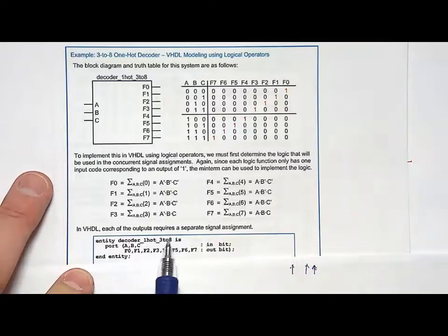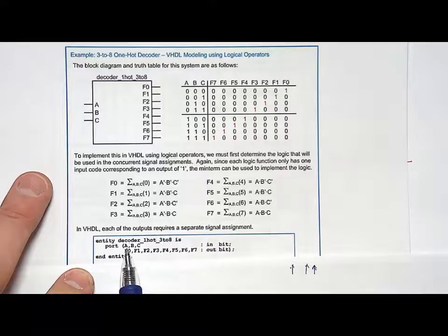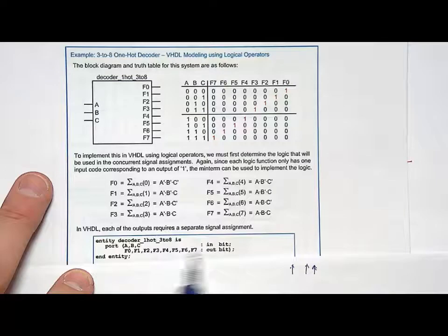Here's what the entity would look like. Let's call it decoder_1hot_3to8. And it's got three input ports. Let's call them scalers. They're inputs. They're bits. Then I have 8 unique outputs. Out type bit.